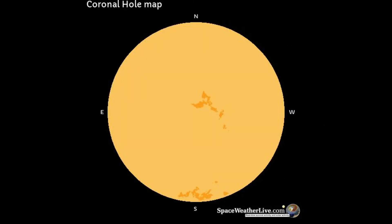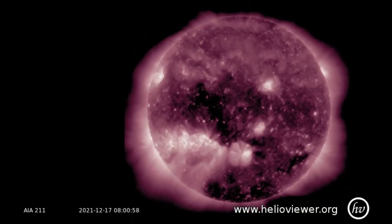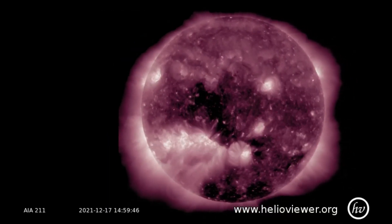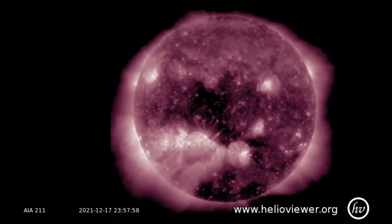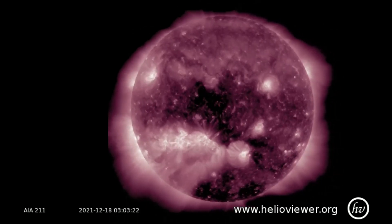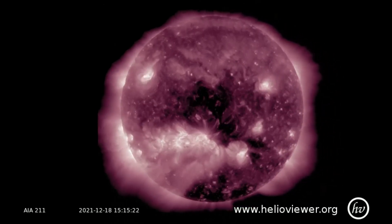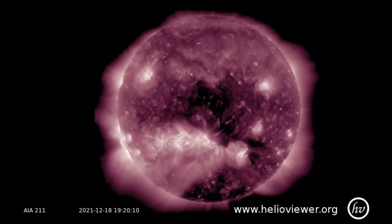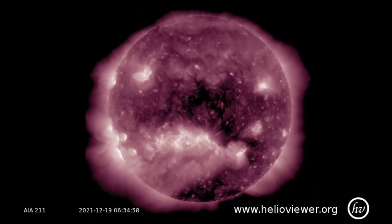The coronal hole map is showing two coronal hole regions at this time. They can be observed on this SDO 211 filter showing the 17th through the 19th. Coronal holes are the source of fast solar wind streams, which sometimes have the potential to produce minor to moderate geomagnetic storms.